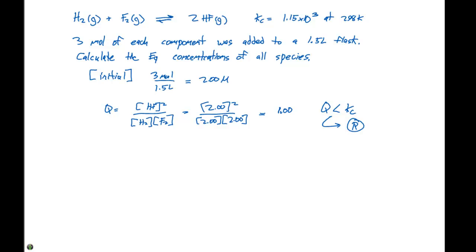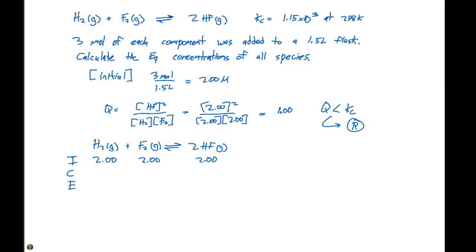One of the things we can do to analyze reactions at equilibrium is set up an ICE table — which stands for Initial, Change, and Equilibrium concentrations of everything present. We have 2.00 molar for all species initially. Since the equilibrium shifts to the right, the concentration of HF is going to increase, and the concentrations of H₂ and F₂ are going to decrease. The change in concentration is dictated by the stoichiometry of the balanced equation.